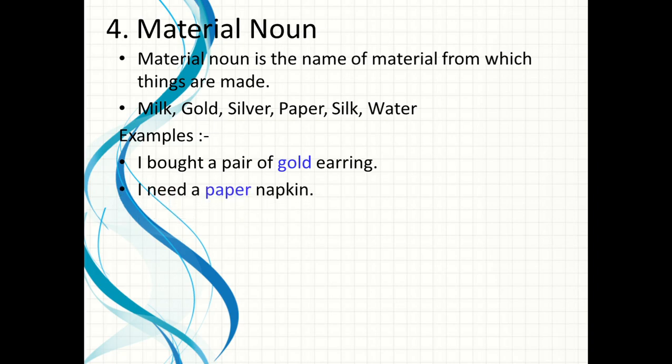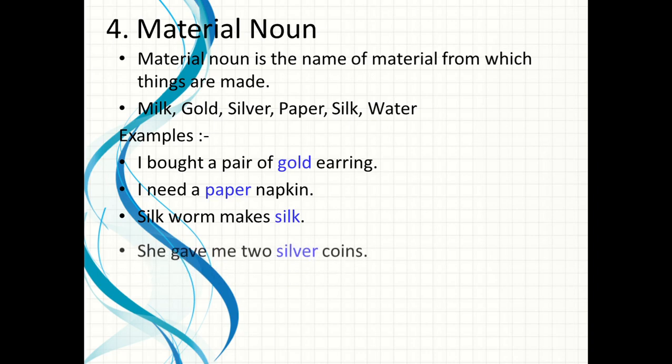'I need a paper napkin' — kis material ka napkin chahiye? Paper ka napkin, so paper is a material noun. 'Silkworms make silk' — silkworms ek particular material banate hain, that material is silk, so silk is a material noun. 'She gave me two silver coins' — silver coins di, so silver is a material noun.